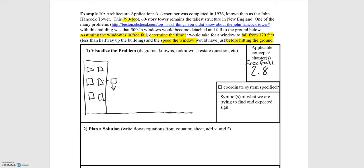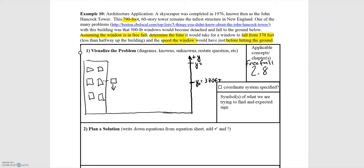We start by defining our coordinate system. I'm going to choose the upward direction to be the positive y direction. Of course you can choose downward as positive — that's totally arbitrary as long as you stay consistent. About halfway up the building, where the window starts to fall, is 370 feet, and the total height of the building is 790 feet.